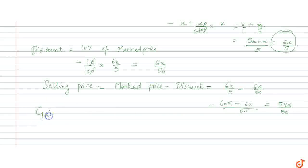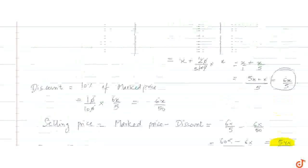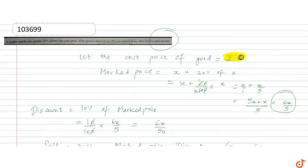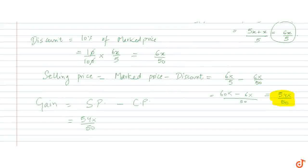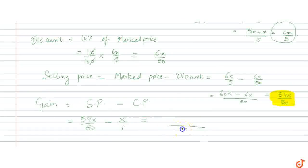Now, we find gain. Gain is selling price minus cost price. Selling price is 54X upon 50. We found this out just here. And cost price is X rupees. So minus X. Taking LCM here, 50 and 1 will give you LCM 50. 54X minus 50X, which is 4X divided by 50.